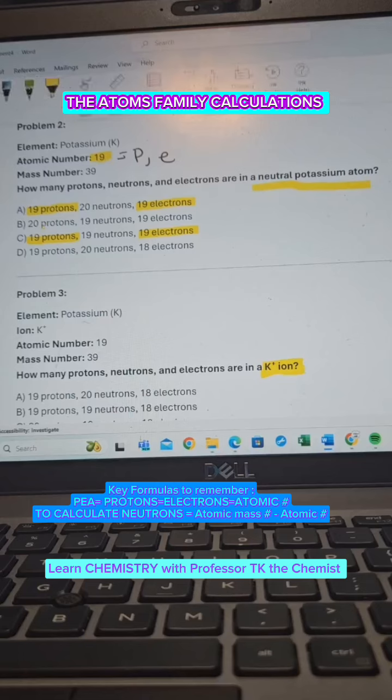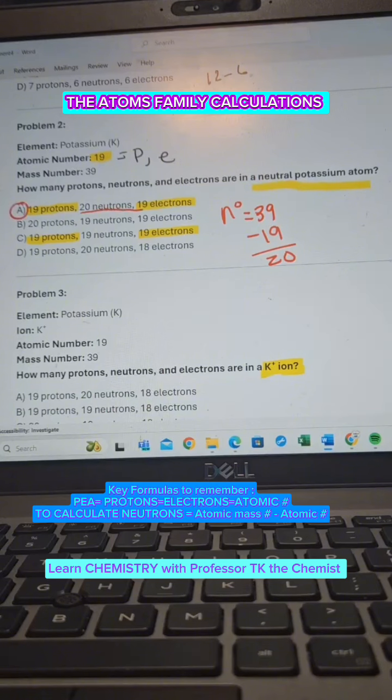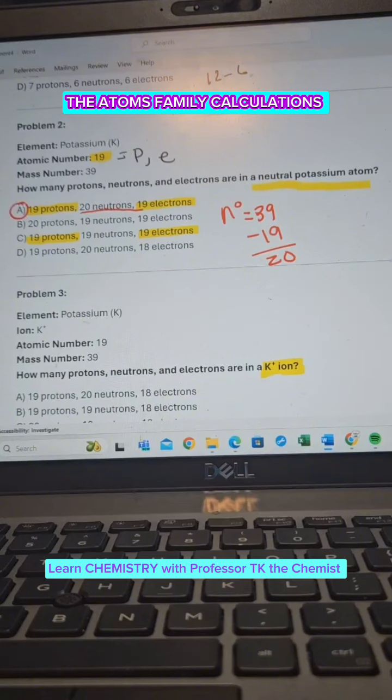Now to calculate your neutrons, all you got to do to get your neutrons, you're going to say 39 minus 19, and you get 20. So the answer that has 20 in the answer for the neutrons is letter A. Now if you get the wrong formula, you will get the wrong answer.